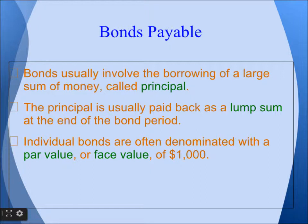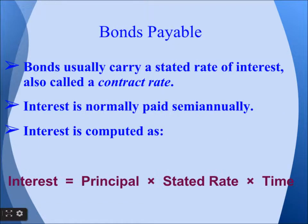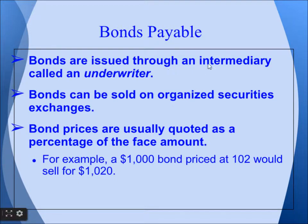Bonds payable: bonds usually involve the borrowing of a large sum of money called principal, which is paid back as a lump sum at the end of the bond period. Individual bonds are often denominated with a par value or face value of $1,000. Bonds carry a stated rate of interest, also called a contract rate, and interest is normally paid semi-annually. Interest is computed as: Interest = Principal × Stated Rate × Time. Bonds are issued through an intermediary called an underwriter.